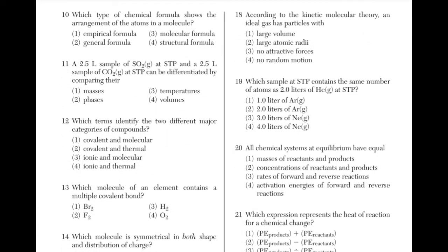Which type of chemical formula shows the arrangement of the atoms in a molecule? The answer is 4: the structural formula will show the arrangement of atoms in a molecule. The empirical formula is a simplified version of the molecular formula which shows the proportion of the elements, and the general formula represents the composition of any member of an entire class of compounds.